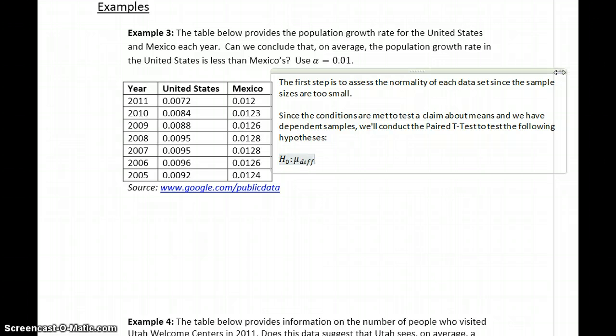So the way StatCrunch will represent this, since we're dealing with dependent samples, is it'll state our population parameter actually as mu diff, so we'll say that that equals 0 for our null hypothesis. And our alternative hypothesis, which in this case, our claim is that the population growth rate in the United States is less than Mexico's.